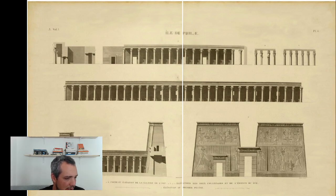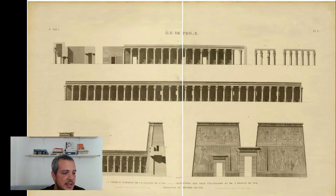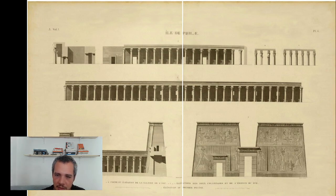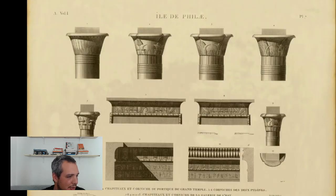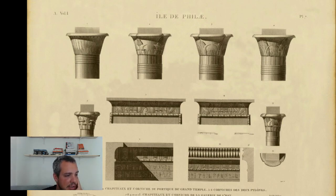These are the columns and this is the main gateway — the pylon, yeah, the pylon — that's a Greek name. So this is the classic entrance of a temple of the New Kingdom. We don't have much from the Old Kingdom; we don't have temples from that period that survived. Mostly New Kingdom stuff has come down to us.